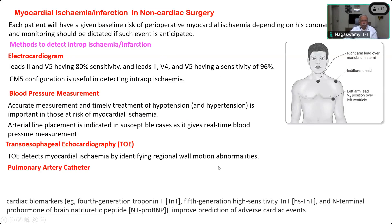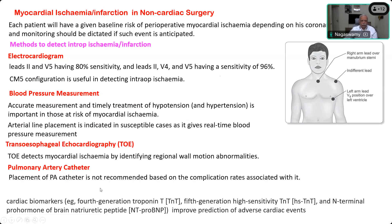The fourth method is placement of a pulmonary artery catheter in high-risk cases — for example, a patient with known prior infarction, treated medically, coming for a major elective procedure. However, a pulmonary artery catheter is not commonly recommended due to associated complication rates. The fifth method is biomarkers: if intraoperative ischemia or infarction is suspected, take a blood sample and send for biomarkers with serial testing, as markers may take one to two hours to rise after the ischemic event.